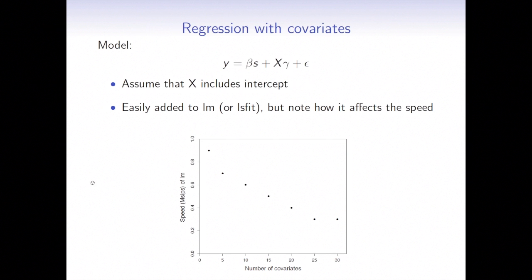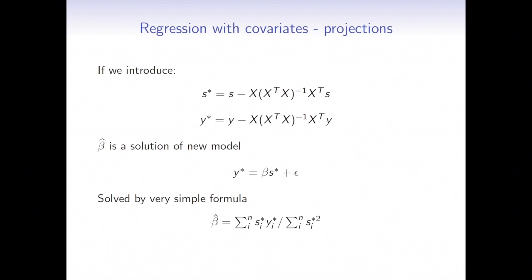So here we checked how covariates are affecting the speed. So for example, here for one covariate, the speed of 0.9 mega-sips drop to 0.3 mega-sips for 30 covariates. So we want to deal with covariates in our semi-parallel computations in an efficient way, not to spoil our achievements from the simple regression.